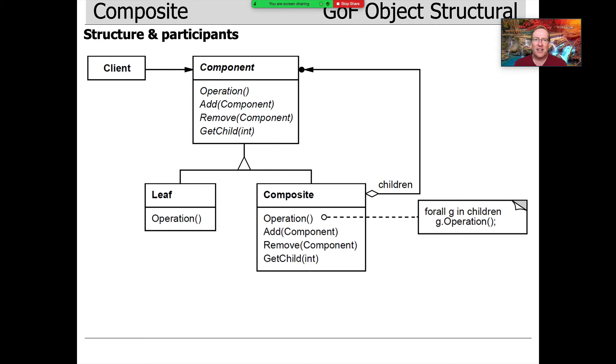Think of like a subfolder in a directory that has other subfolders and files, for example. In this case, the operation that's applied on composite will delegate or forward to all of its children and apply the operation on them. So that's what the composite does.